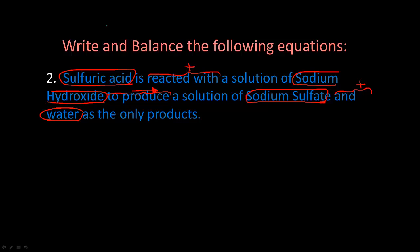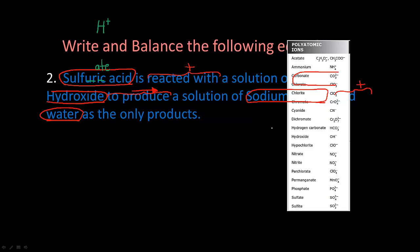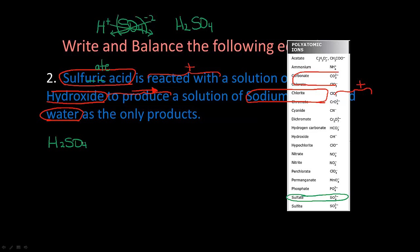Let's do sulfuric acid first. All acids start with H. 'Sulfuric' ends in 'ic,' so I change the ending to 'ate' — sulfate. Looking at our polyatomic ions, sulfate is SO₄ with a minus two charge. Cross them: the 2 goes down by H making H₂, and the 1 goes down by SO₄. So the formula for sulfuric acid is H₂SO₄.